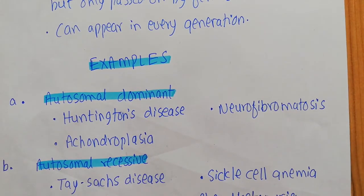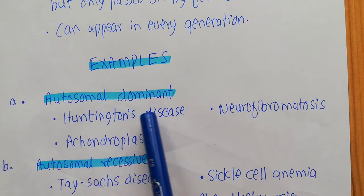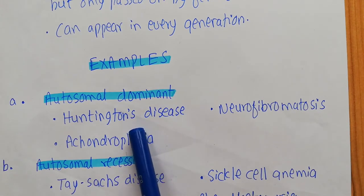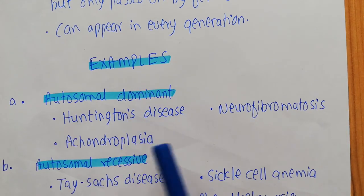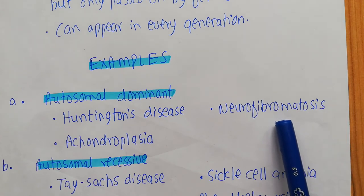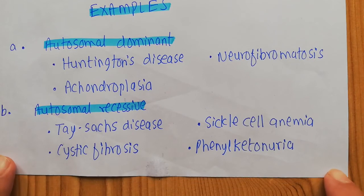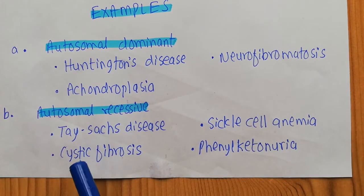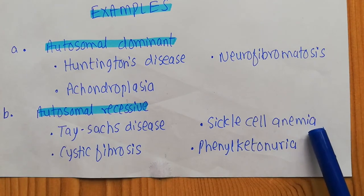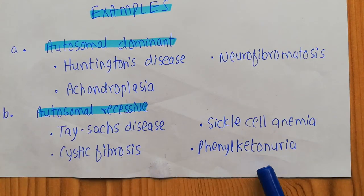Here are some important examples we will discuss in coming videos. Examples of autosomal dominant diseases include Huntington disease, neurofibromatosis, and achondroplasia. Examples of autosomal recessive diseases include Tay-Sachs disease, sickle cell anemia, cystic fibrosis, and phenylketonuria. We will discuss these diseases in detail in coming videos.